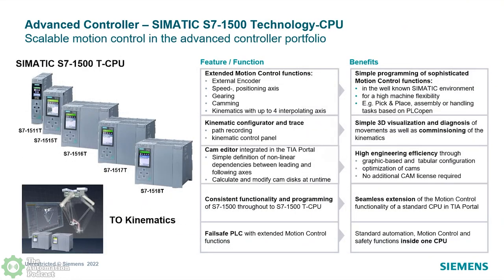I want to jump into the first form factor, which is the 1500 form factor of the technology CPU. Listed on the left-hand side are all the variations of the 1500 technology CPU: 1511, 1515, 1516, 1517, and now our high-end 1518. I used to call them single-wide, double-wide, and triple-wide. When it comes to panel space being at a premium, customers get it right away. As you go from 1511 to 1518, the processing power also goes up.